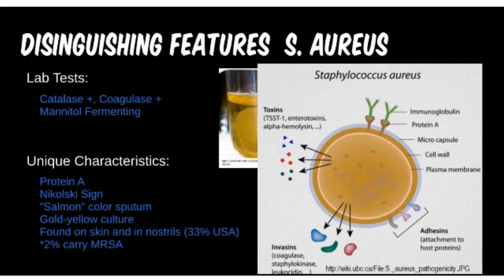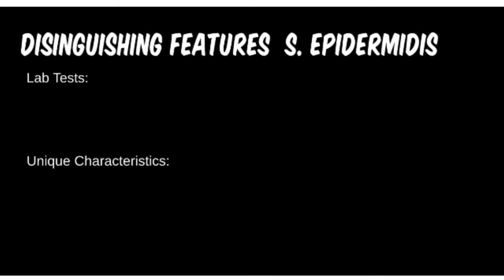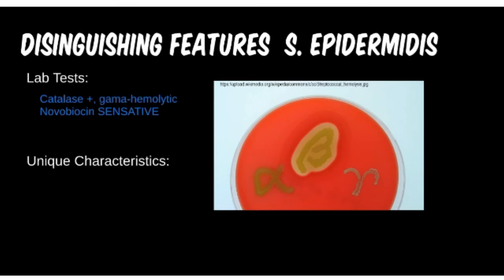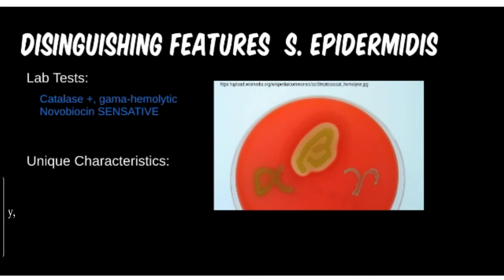Like all Staph, Staph epi also has catalase. None of the other Staphylococcus species we discuss have coagulase. So if we have a culture showing gram-positive spheres in clusters, we can use hemolysis and antibiotic sensitivity testing to distinguish between different species in the same genus. There are three antibiotics important to memorize for medical course questions: Novobiocin, Bacitracin, and Optochin. Memorize which bacteria is resistant or sensitive to each.